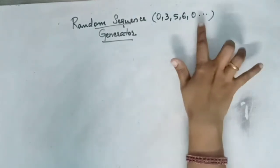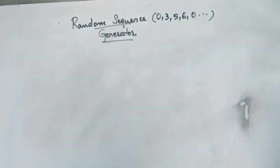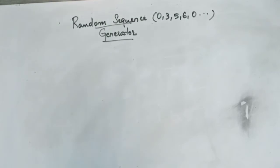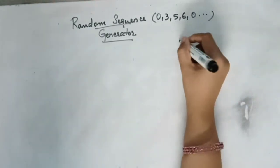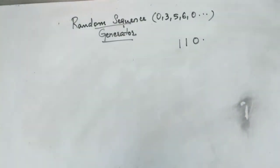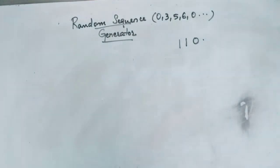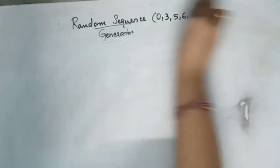First, you have to see which is the largest number in the sequence. In this case the largest number is 6, and 6 is 110 in binary, so you need 3 flip-flops. The largest number determines how many flip-flops you need to represent it — that is the number of flip-flops.